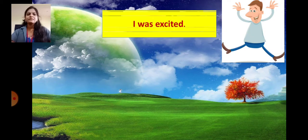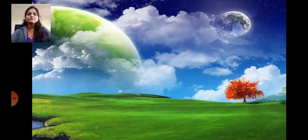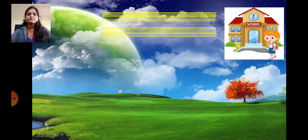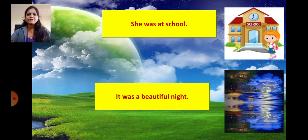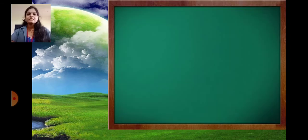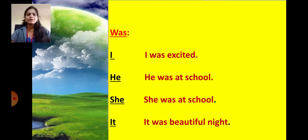For example: I was excited. He was at school. She was at school. It was a beautiful night. So students, in these sentences you can see that with I, he, she and it we used was.